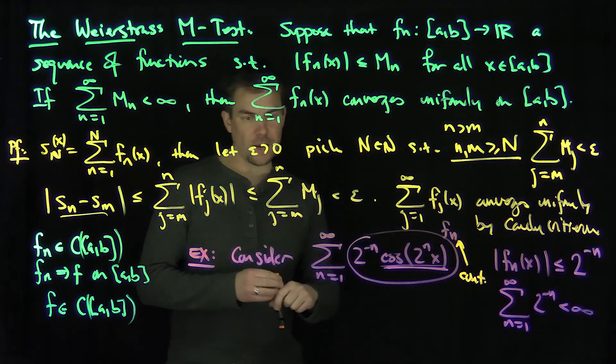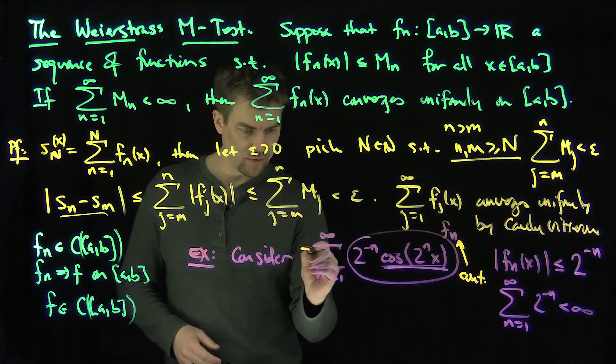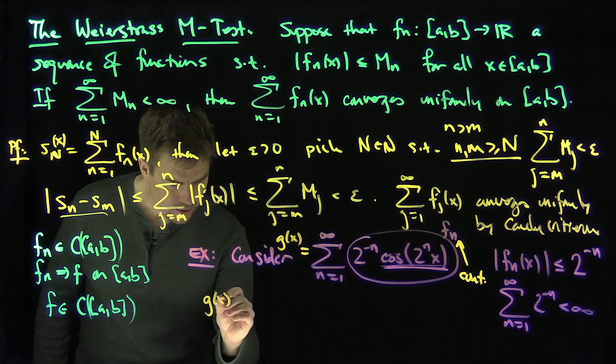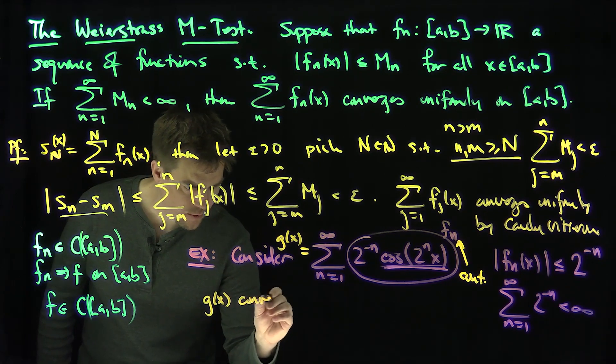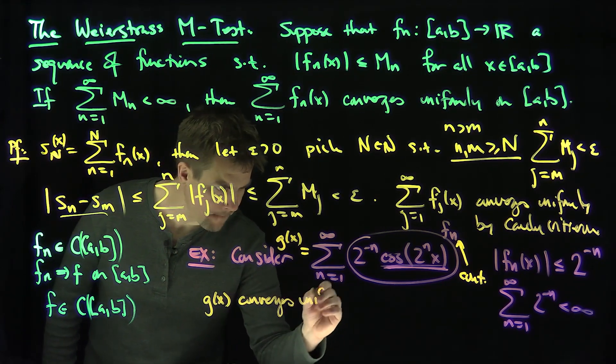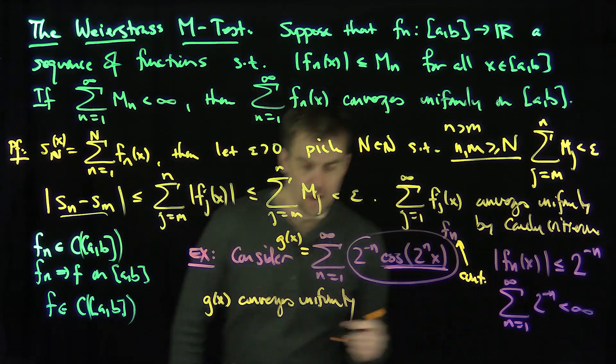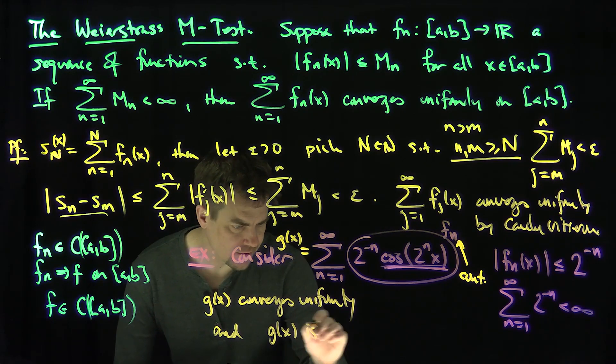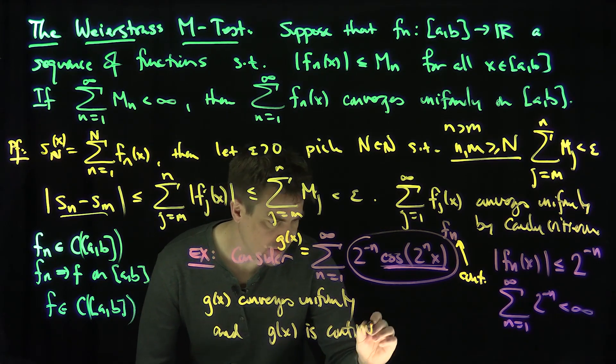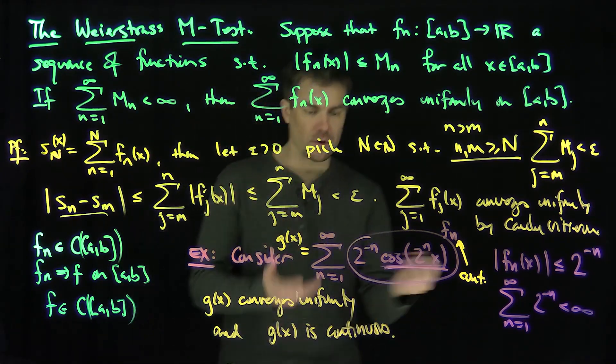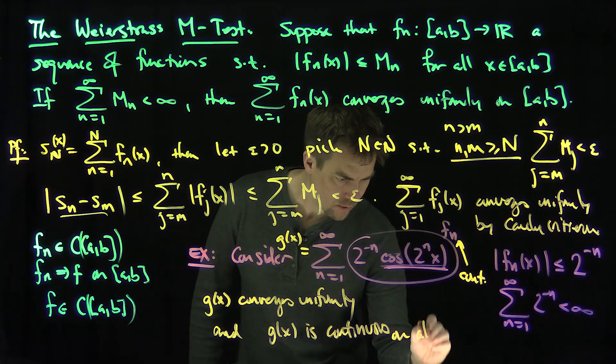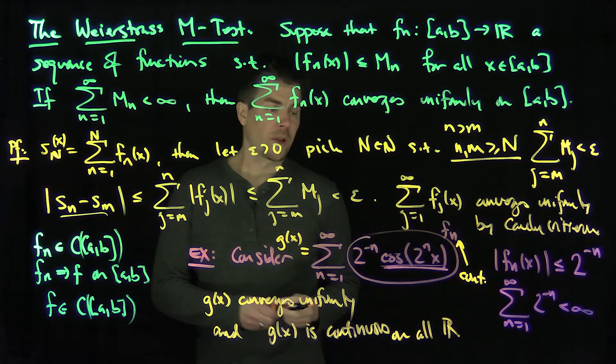So I have, by the Weierstrass M-test, this function, let's call it g(x), converges uniformly. And g(x) is continuous, it's continuous actually on all of R.